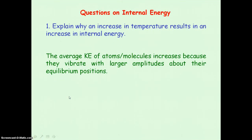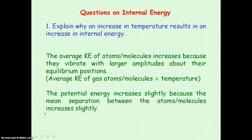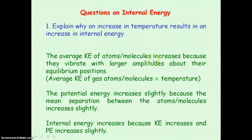For gases, the average kinetic energy of the atoms or molecules is directly proportional to the absolute temperature, so increasing the temperature increases the average kinetic energy. Also, by increasing the temperature, the mean distance of separation between the atoms or molecules increases slightly, so the potential energy increases slightly. As a result, both kinetic and potential energy increasing means the internal energy increases.